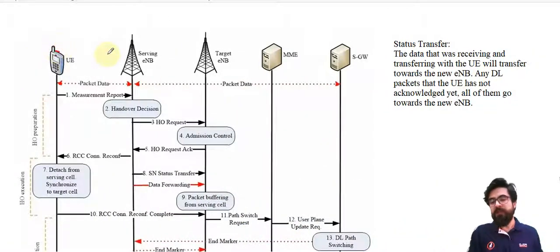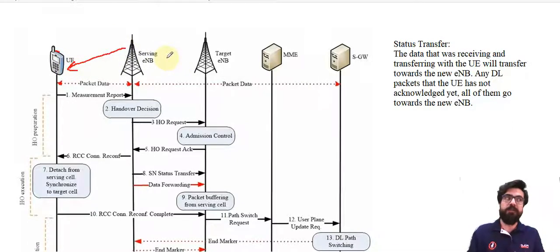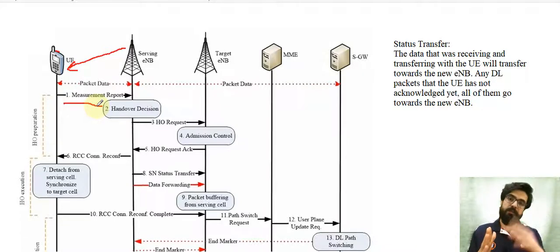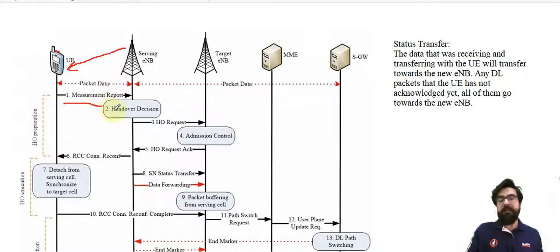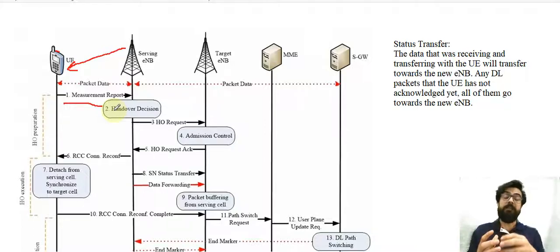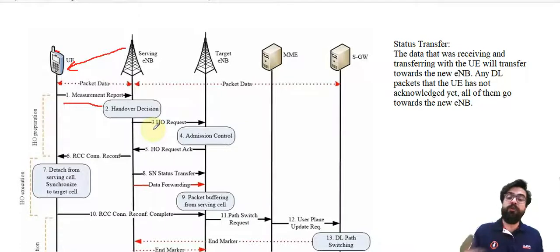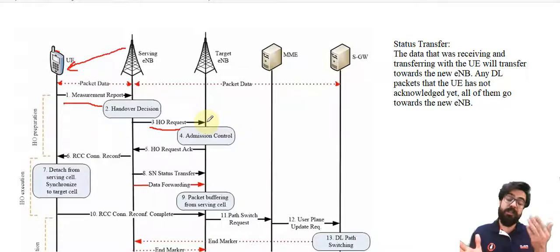We're here at the UE. There is a message from the serving eNodeB towards the UE — we call that the measurement procedure — saying, do some measurements for me. The UE starts to do measurements, acknowledges the message, and sends reports. When the serving eNodeB realizes that the UE can have another connection, or that the UE passes that threshold, it makes the handover decision and sends a handover request towards the new or target eNodeB.